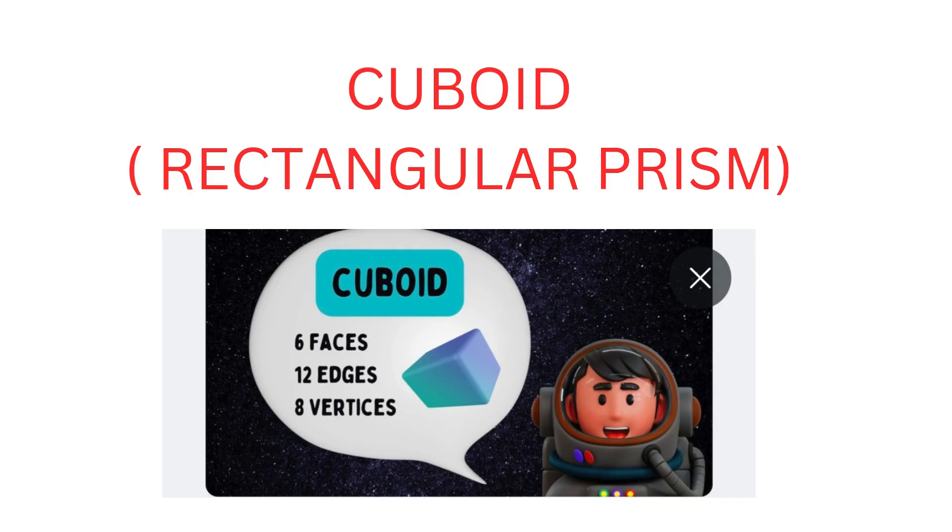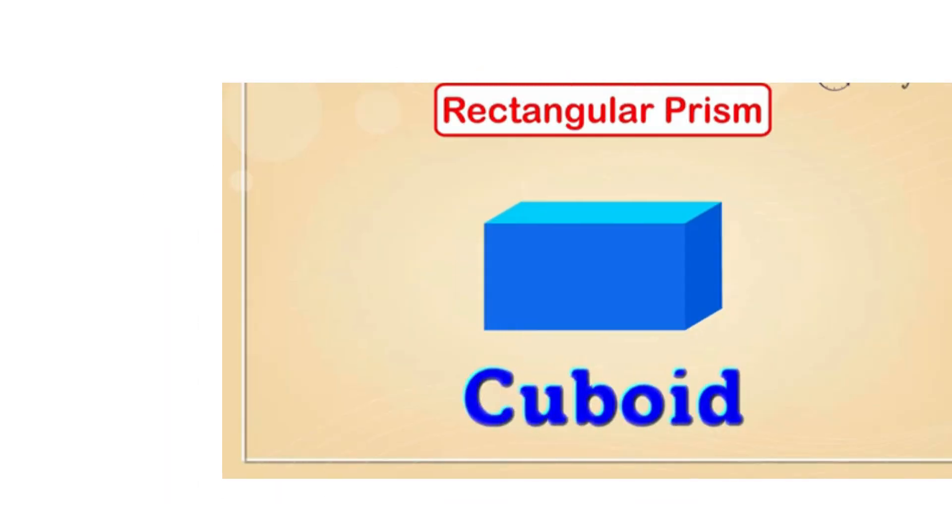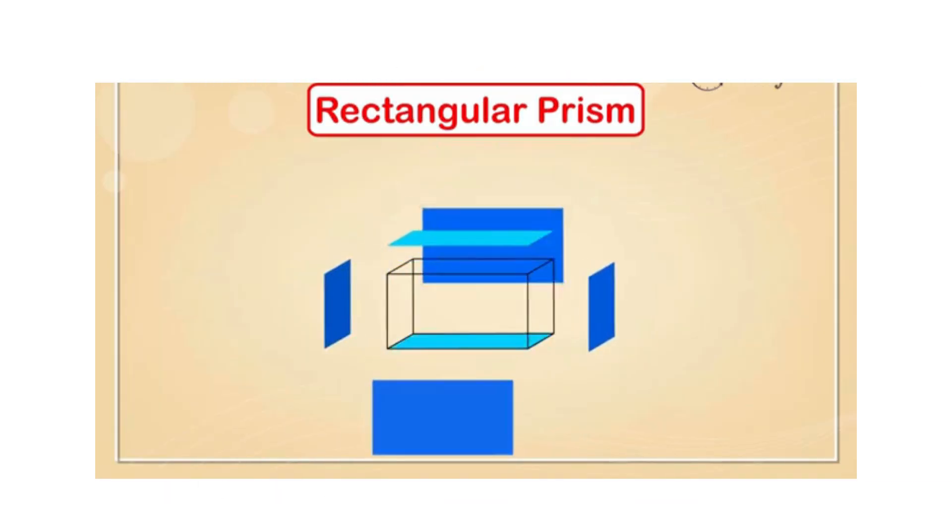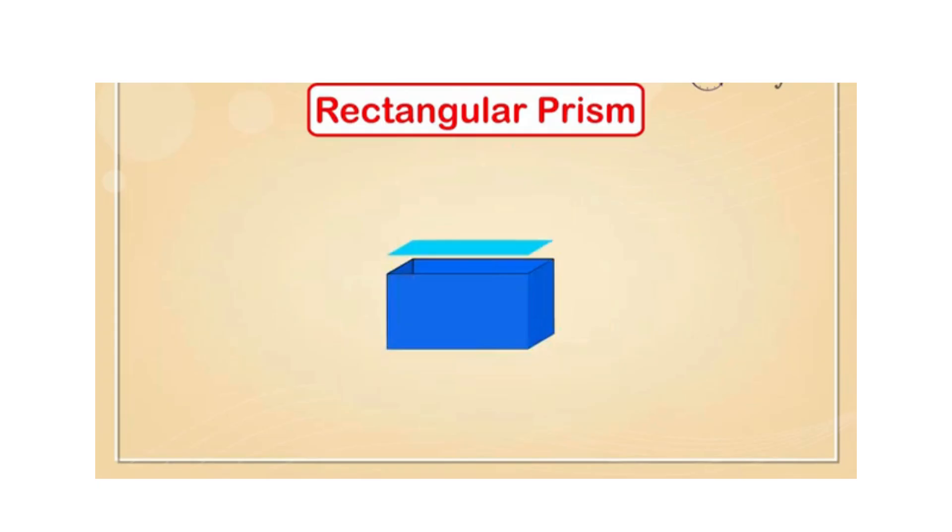So first is cuboid or rectangular prism. A rectangular prism has 1, 2, 3, 4, 5, and 6 faces.